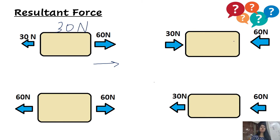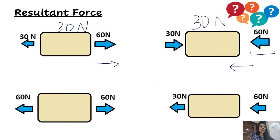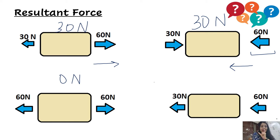Next case: 60 Newton towards the left and 30 Newton towards the right. Since they are in opposite directions I subtract them. 60 Newton has the greater magnitude, so the direction is towards the left, and the resultant magnitude is 30 Newton. Third case: 60 Newton left and 60 Newton right — equal magnitudes, so they cancel and the resultant is 0 Newton. Last case: 30 Newton left and 60 Newton right — both in the same direction, so I add them: 30 plus 60 equals 90 Newton towards the left.